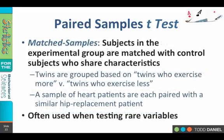There is a second way that we could set up two groups. It's called a matched sample, and that is where we take subjects in our experimental group and we match them purposely with control subjects who share the same characteristics.